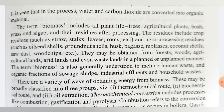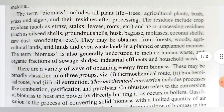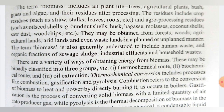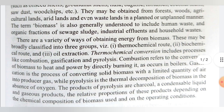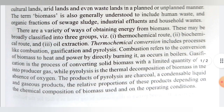These are also used for biomass production. They may be obtained from the forest, wood, agricultural land, degraded lands and even wasteland in a planned or unplanned manner. The term biomass is also generally understood to include human waste and the organic fraction of sewage sludge. So industrial effluent and household wastage are also useful for preparing biomass products.